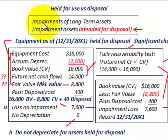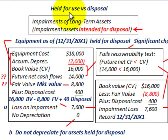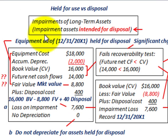What we're going to be looking at here is impairment of long-term assets. These assets either can be held for use in the future, or they can be intended to be disposed of. We're going to be looking at the example here where we have impairment of assets where they're intended to be disposed of.